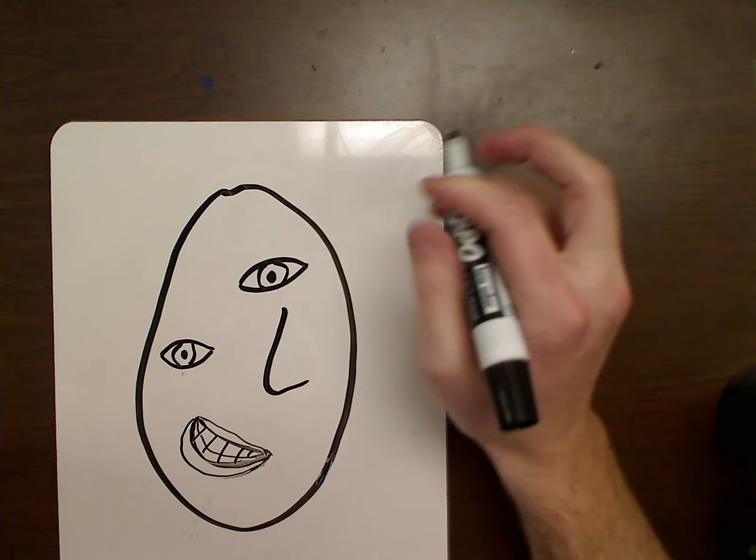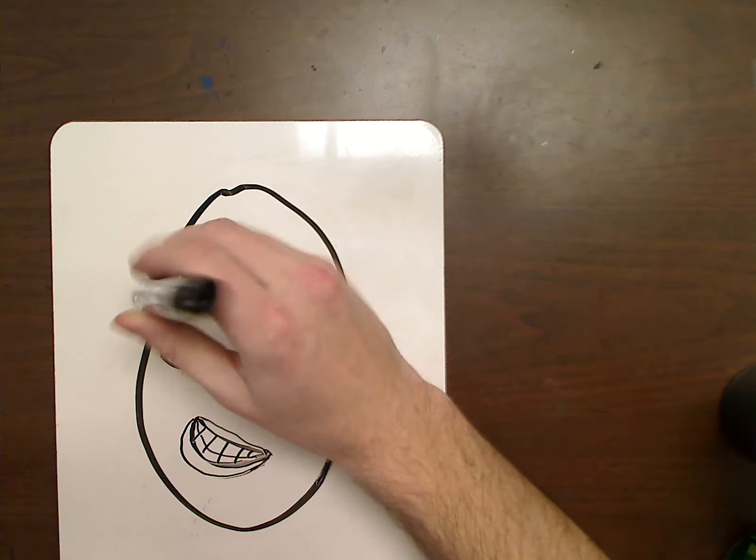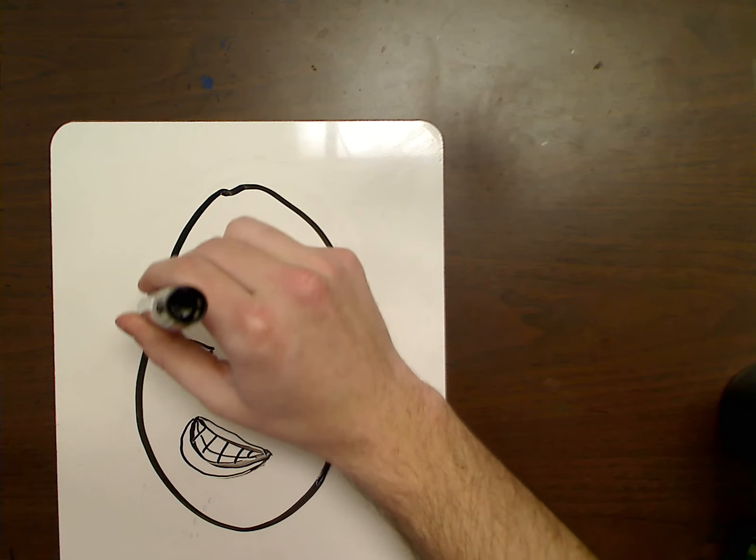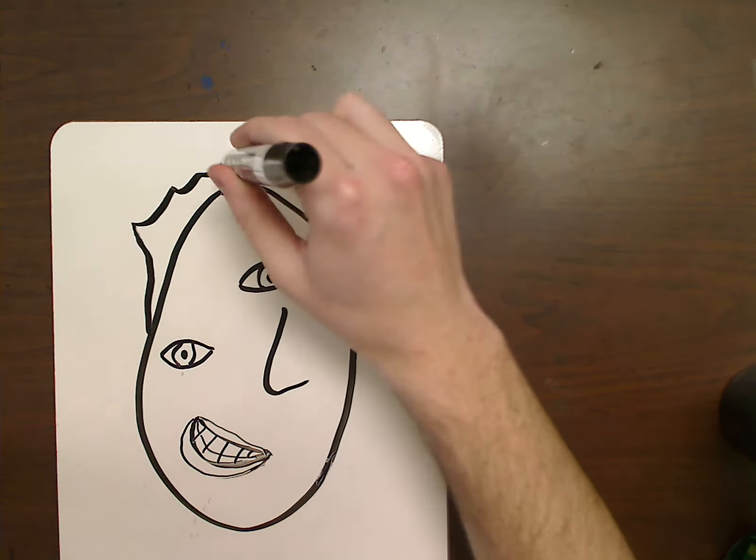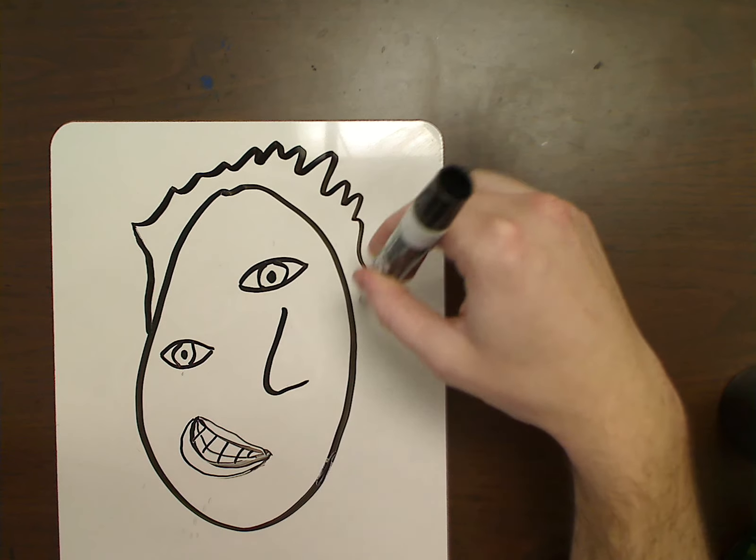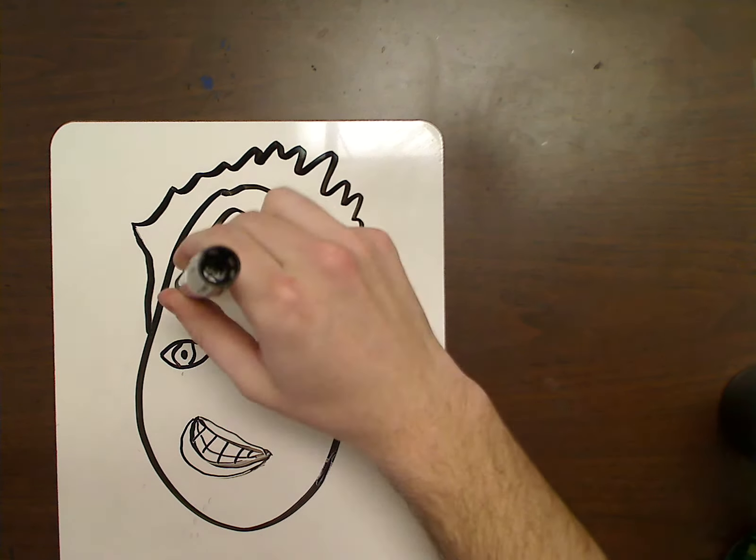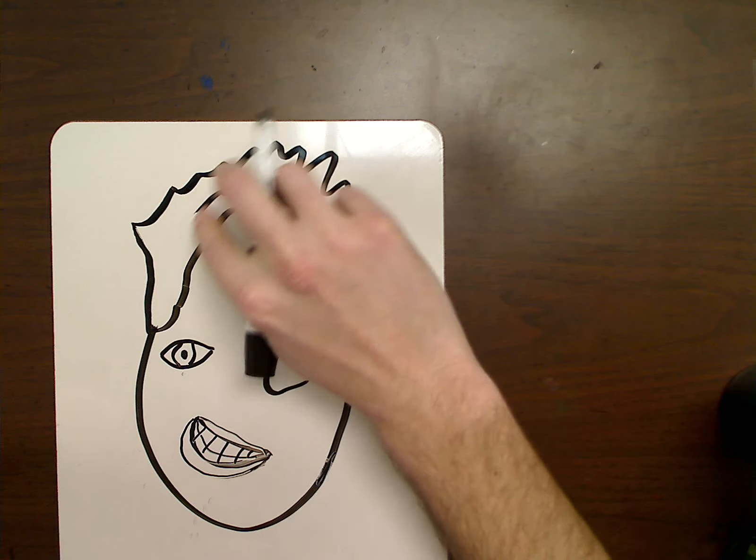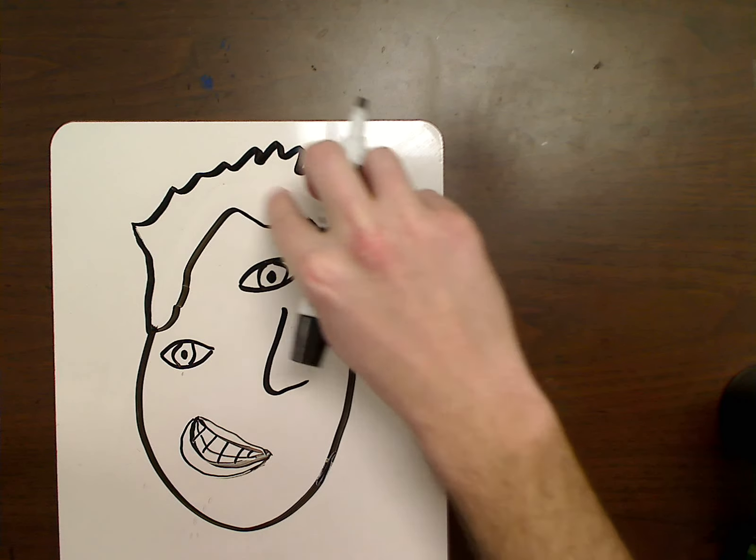Next up, we can add some hair. So we'll probably want the hair to be on the top of our picture. So I'm going to give it some crazy hair. And I can just erase that line after I'm done.